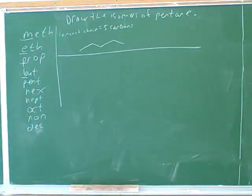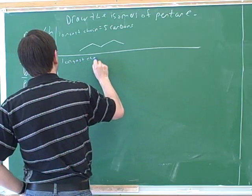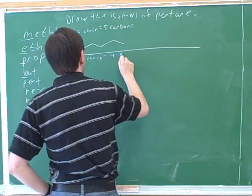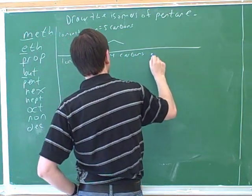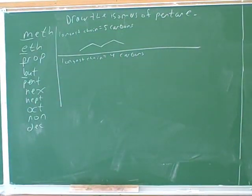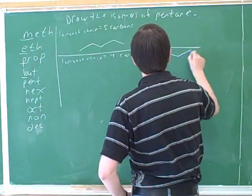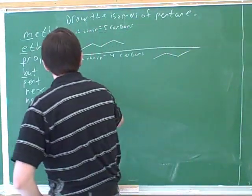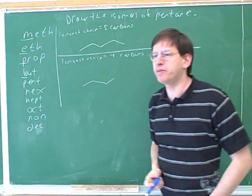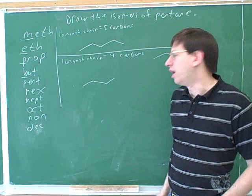Then what? I'm doing, I guess, four. Now we do the longest chain equals four carbons. So how many more carbons do we have to place? One. All right, so now we have to ask where we can put it.